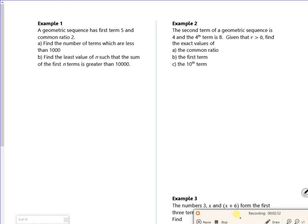So it says a geometric sequence has first term 5 and common ratio 2. So I know that a is 5, r is 2. It might have asked me to find the tenth term, and then that would just be 5 times 2 to the power of 9.